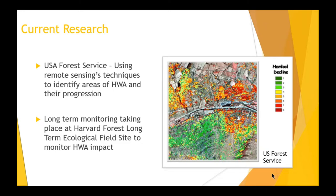Although plot-based sampling is useful, comprehensive landscape-scale coverage of the hemlocks and their vulnerability is needed to fully assess the potential impacts on the forest resource and to hopefully come up with successful strategies to mitigate impact. The US Forest Service has been using a variety of different remote sensing techniques and has successfully identified areas of hemlock woolly adelgid in their progression.